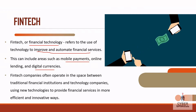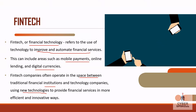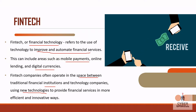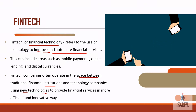Fintech companies often operate in the space between traditional financial institutions and technology companies, using new technologies to provide financial services in more efficient and innovative ways. We are talking about internet banking, mobile banking, and UPI — all forms of financial transactions that fintech enables.